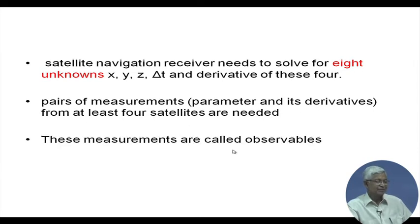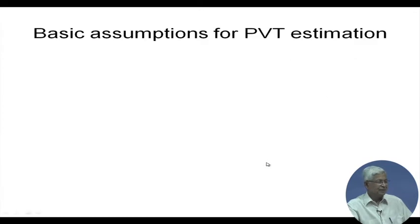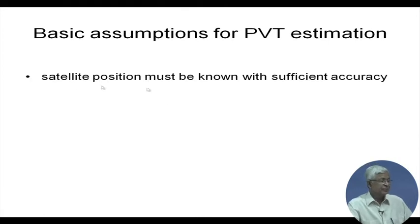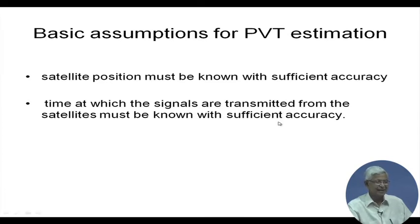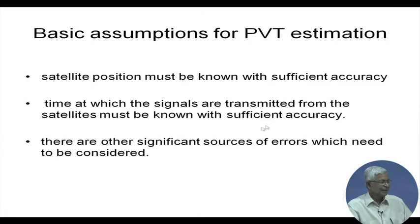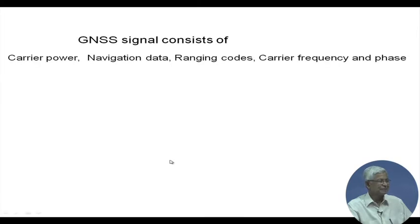These measurements are called observables. The basic assumptions of PVT estimation are: satellite position must be known with sufficient accuracy — if that is in error, your position is in error. The satellite position at the time the signals are transmitted must also be known with sufficient accuracy. There are other significant sources of error which need to be considered. Now let us look at the signal transmitted from the satellite.